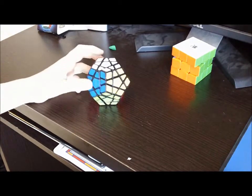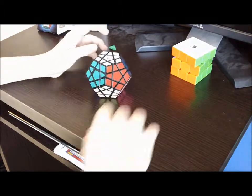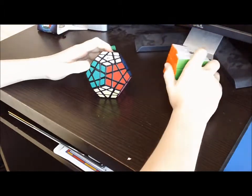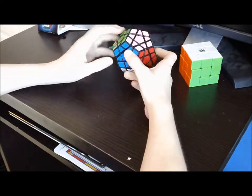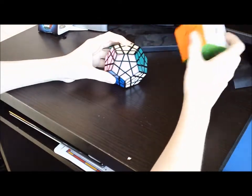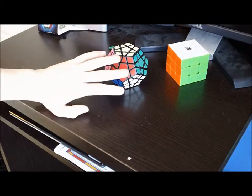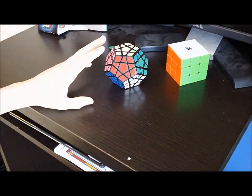But, you know, the Megaminx is very similar to a 3x3 cube. Not much, but it kind of is. There's just 12 sides instead of 6, so you kind of double it. But other than that, it has some similar algorithms to the 3x3.